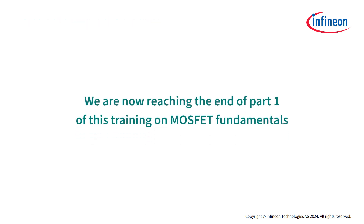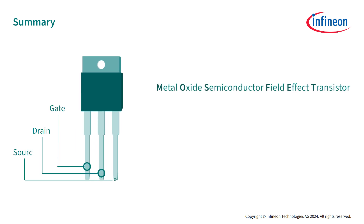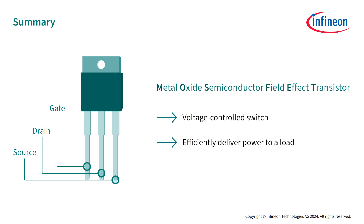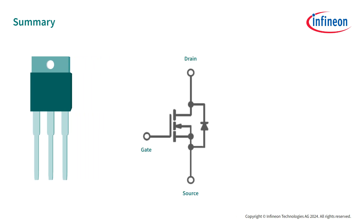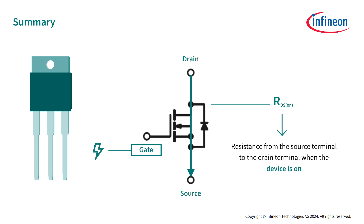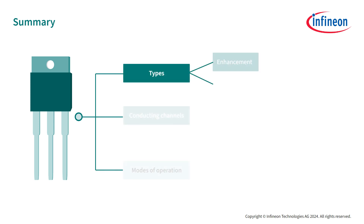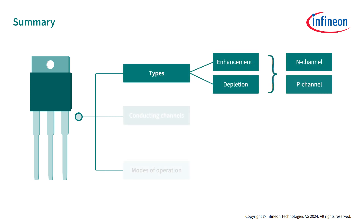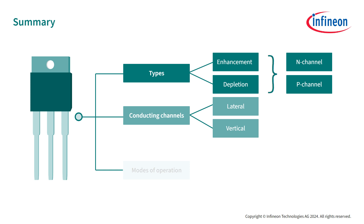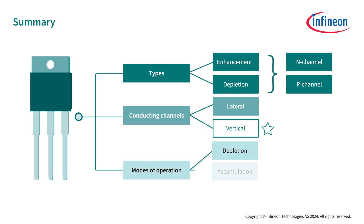We are now reaching the end of Part 1 of this training on MOSFET fundamentals. A MOSFET is a semiconductor device with three terminals, typically used as a voltage-controlled switch, whose main purpose is to efficiently deliver power to a load. The current flows from the drain to the source terminals by applying a gate voltage. The RDS-ON is the resistance from the drain to the source terminal when the device is on; when off, the inherent body diode blocks the voltage. There are two types of MOSFETs — enhancement or depletion — both with N-channel and P-channel modes, and MOSFETs can have lateral or vertical conducting channels, with vertical being preferred. Finally, there are three different modes of operation: depletion, accumulation, and inversion.